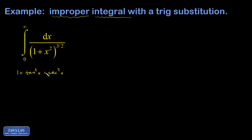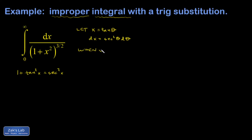Let's make this substitution: let x equal tangent of theta, where theta is going to be the new integration variable. I have to transform dx as well — that's the derivative of tangent, which is secant squared, multiplied by d-theta. I'll also transform the limits of integration. When x equals zero, we have zero equals tangent of theta, so theta equals zero.